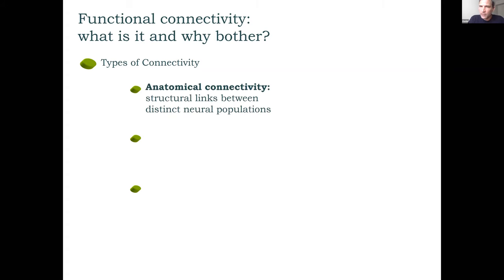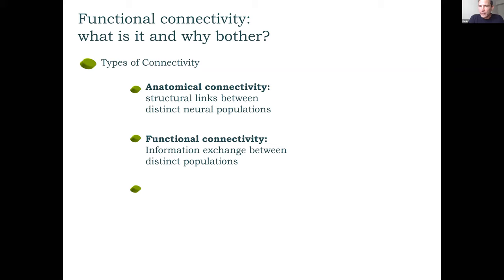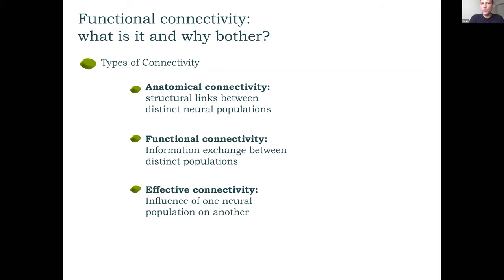The first is anatomical connectivity: structural links between distinct neuronal populations. The second is functional connectivity, referring to information exchange between distinct brain areas or regions. The third type is effective connectivity — an assessment of the influence of one neuronal population over another. Is one brain area driving another? Is there information flow, and can we infer the direction of that flow — from parietal to prefrontal cortex, or from visual to parietal areas?